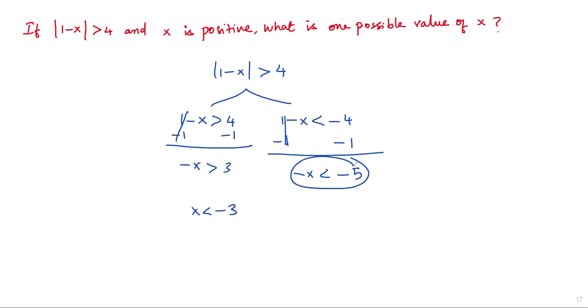In the second inequality, if I multiply both sides by negative sign, it becomes positive x, the less than sign becomes greater than, and negative 5 becomes positive five.